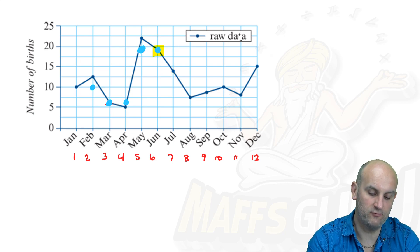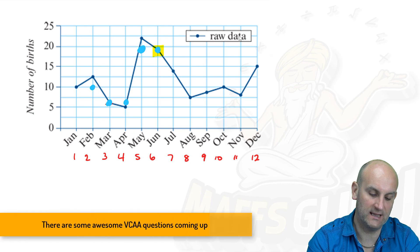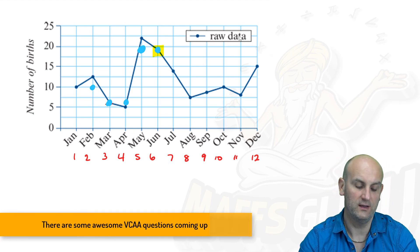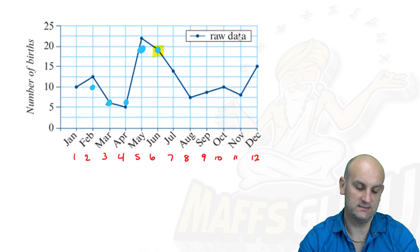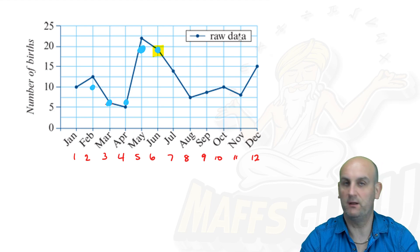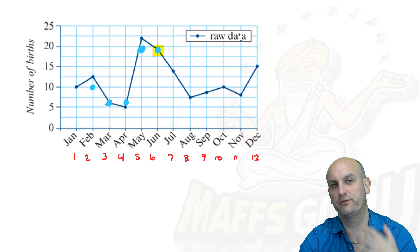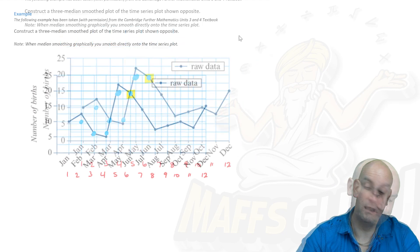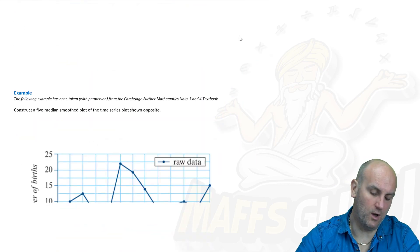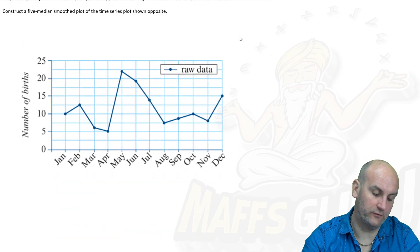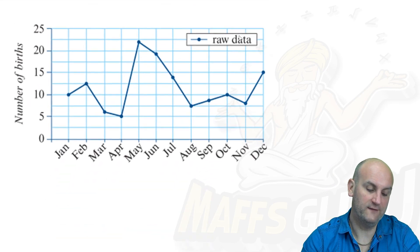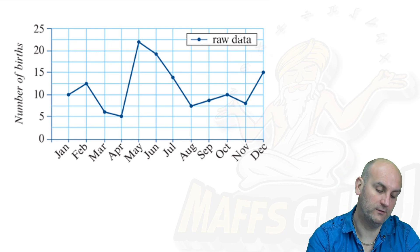I could spend the rest of this video doing this, but those are my three median smooth data points. Now it wants us to repeat the process with a five median smooth.